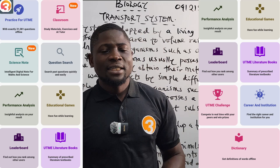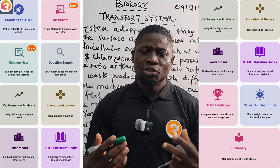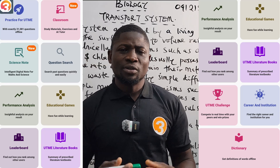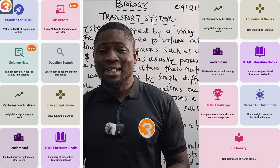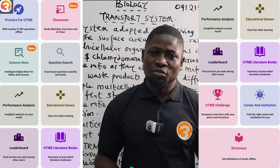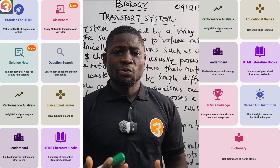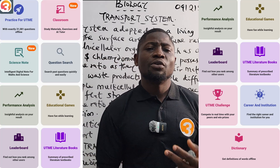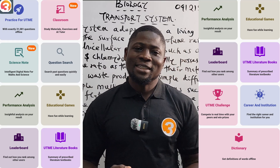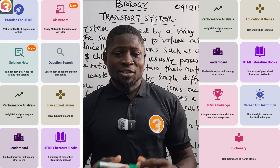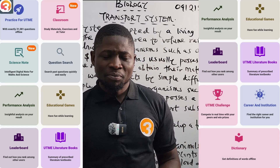The app also has a classroom feature with lecture notes structured according to the JAMB syllabus. The recent JAMB syllabus is available in the classroom so you don't need to search for it elsewhere. There is also a question search feature: after studying a particular topic, you can search for questions on that topic and all questions JAMB has set from that topic will come out for you to answer — far better than a paper past question book.